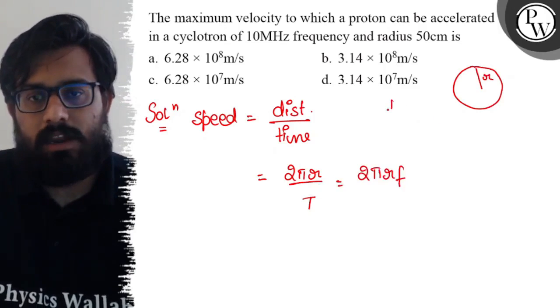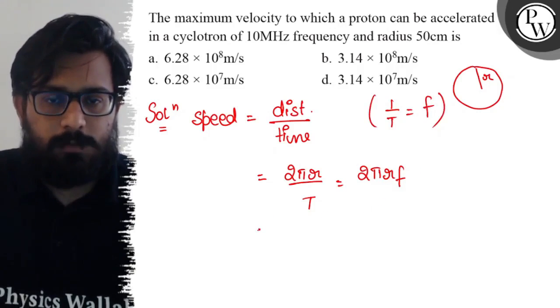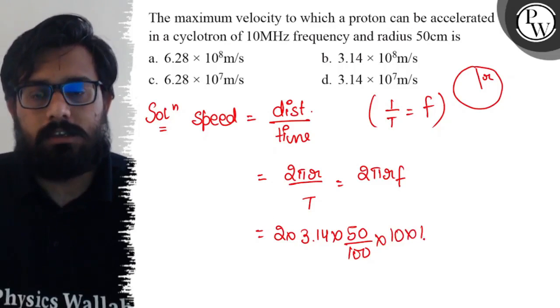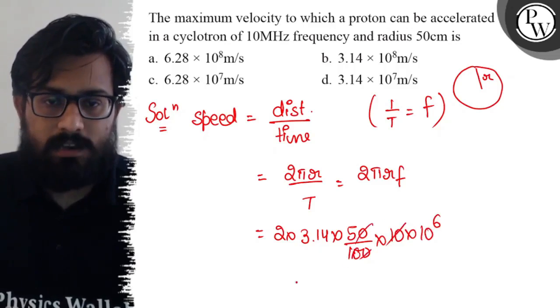So simplifying, we get 2πr × frequency. We know that 1/T equals frequency. Putting the values: 2 × 3.14 × radius (50 centimeters converted to 0.5 meters) × frequency (10 MHz, which is 10^6 Hz). The zeros cancel,